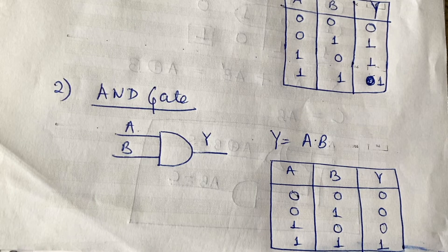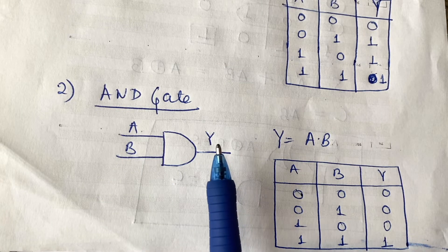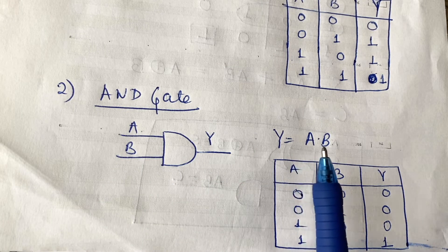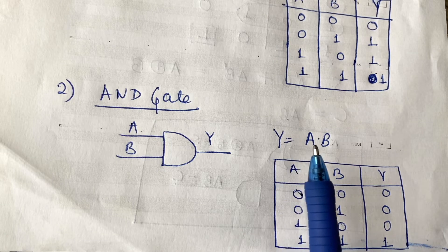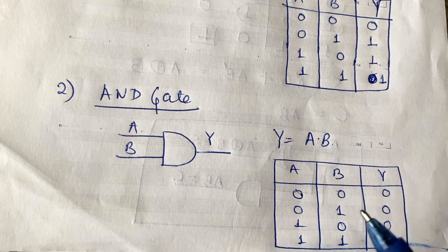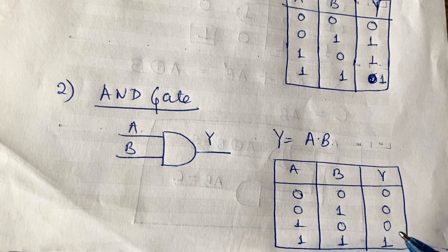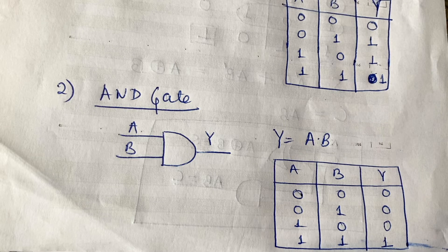Now we will move to the AND gate. A and B are inputs, and Y is the output. The AND gate performs multiplication — A dot B is the output. The four combinations are: 0-0, 0-1, 1-0, and 1-1. Truth table: 0 into 0 is 0, 0 into 1 is 0, 1 into 0 is 0, and 1 into 1 is 1.